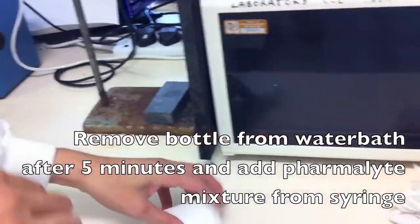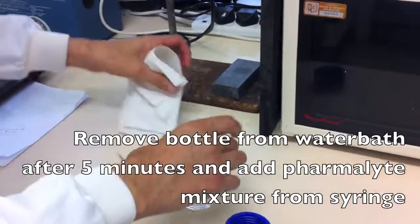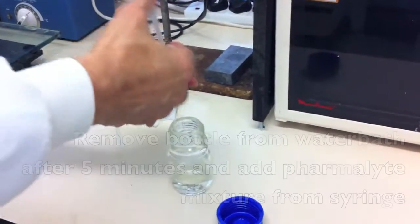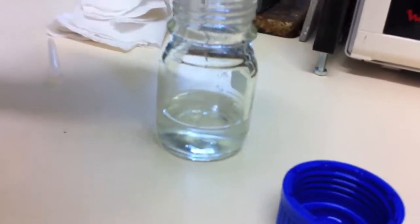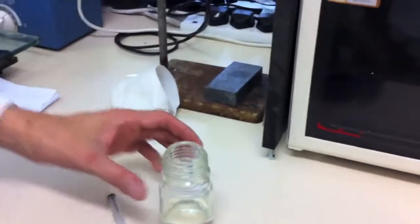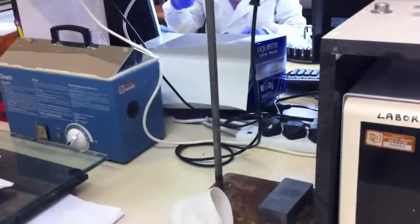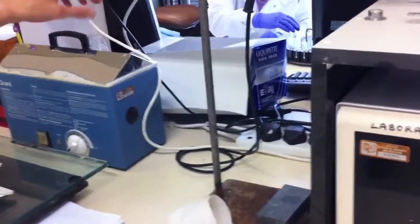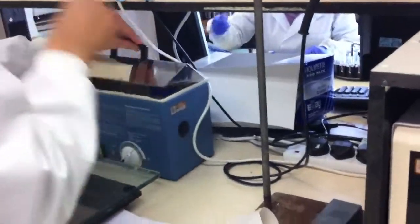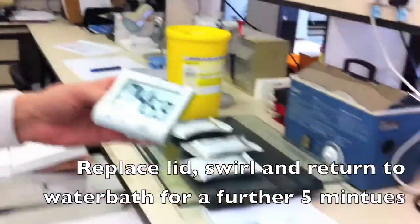After the five minutes has elapsed, remove the bottle from the water bath and add the pharmalyte mixture from the syringe. Replace the lid, swirl and return to the water bath for a further five minutes.